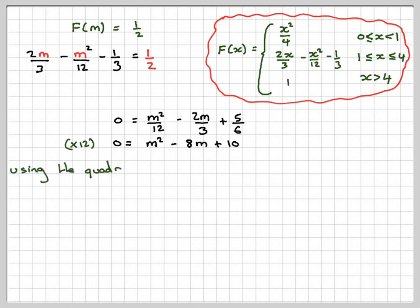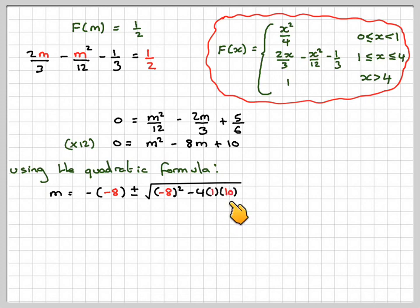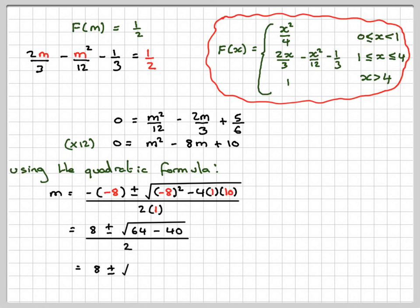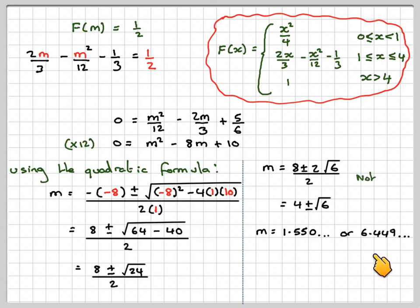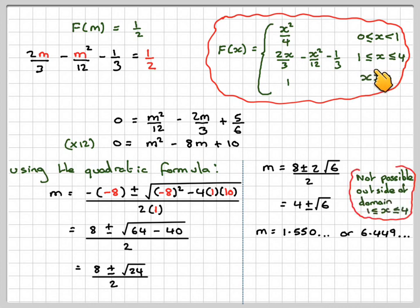It doesn't factorize, so we use the quadratic formula. Minus b is minus minus 8, and b is minus 8. So: 8 plus or minus square root of 64 minus 40, all over 2. That's 8 plus or minus square root of 24 over 2. Simplifying root 24 as 2 root 6: we get 8 plus or minus 2 root 6 over 2, giving M equals 4 plus or minus root 6. Working these out: M equals 1.55 or 6.449. The value 6.449 is outside the valid domain, so we reject it. The median is 1.55 to 3 significant figures, or exactly 4 minus root 6.